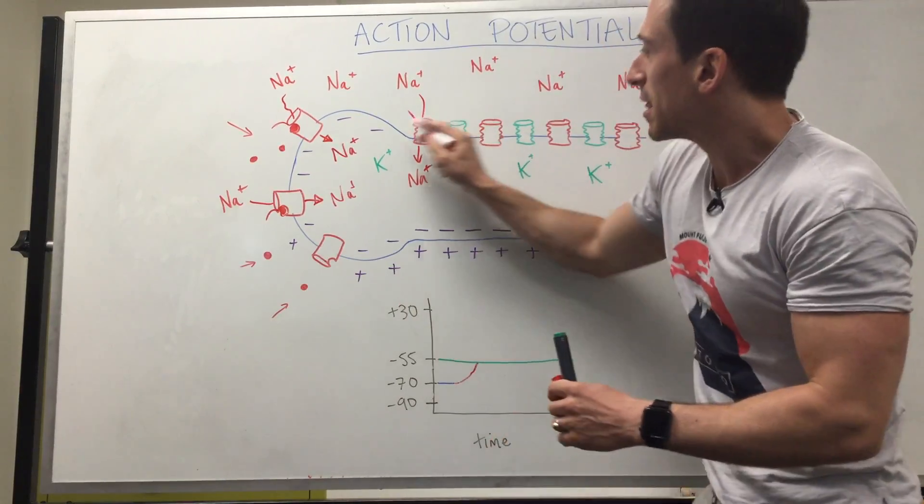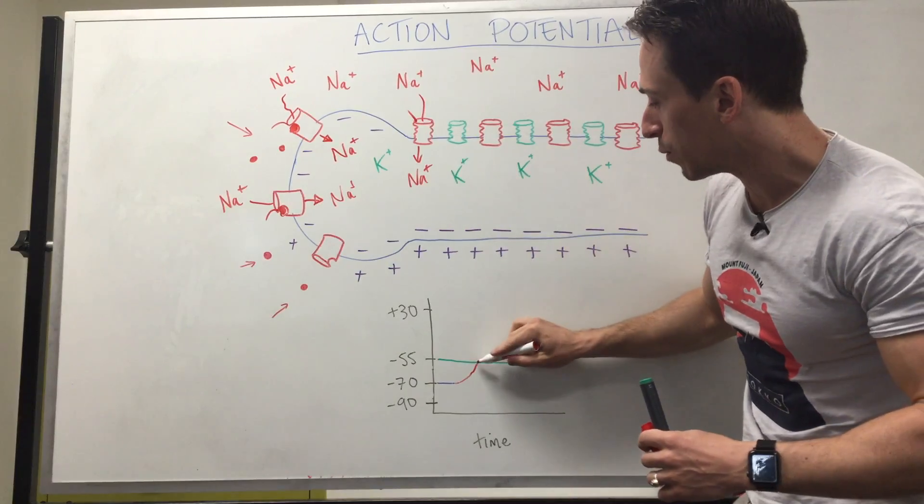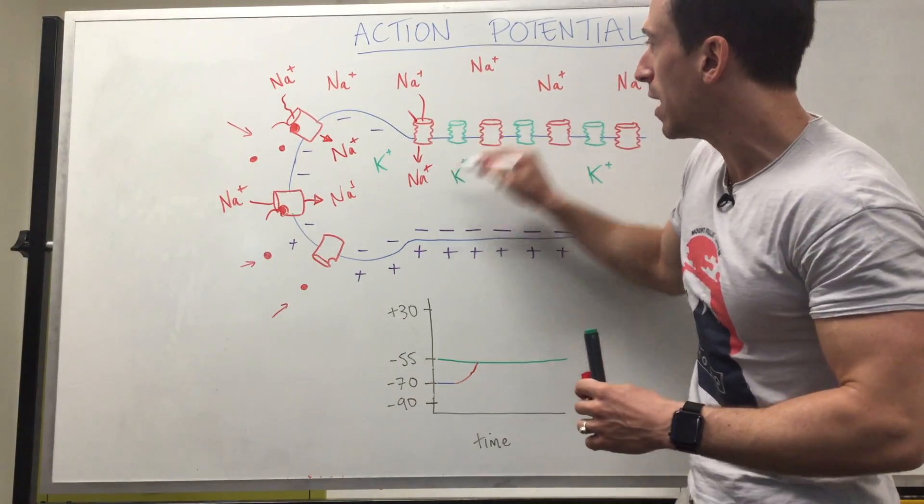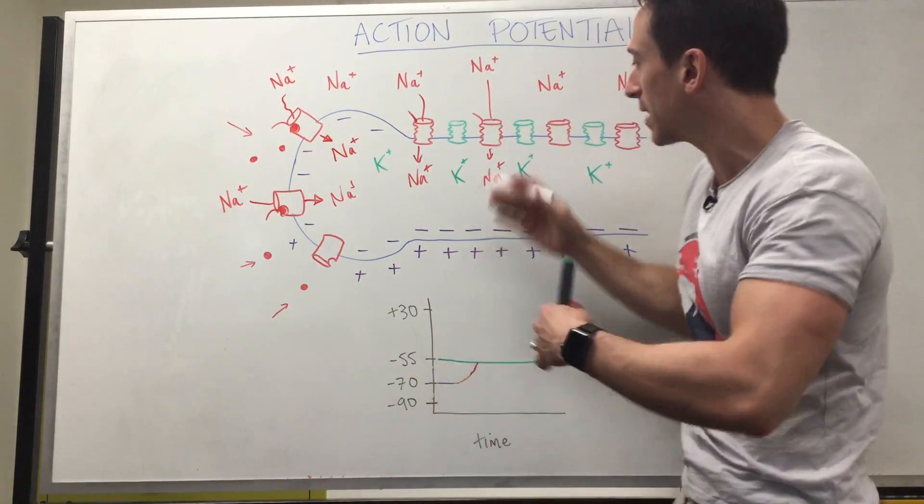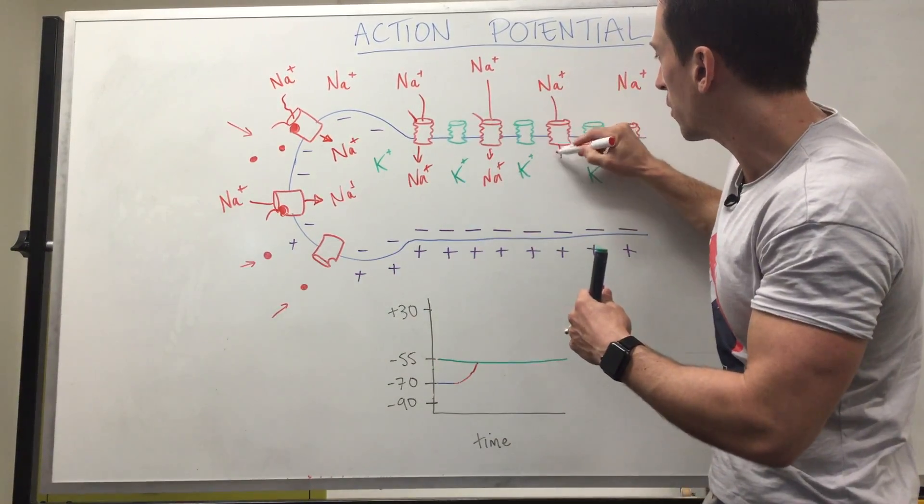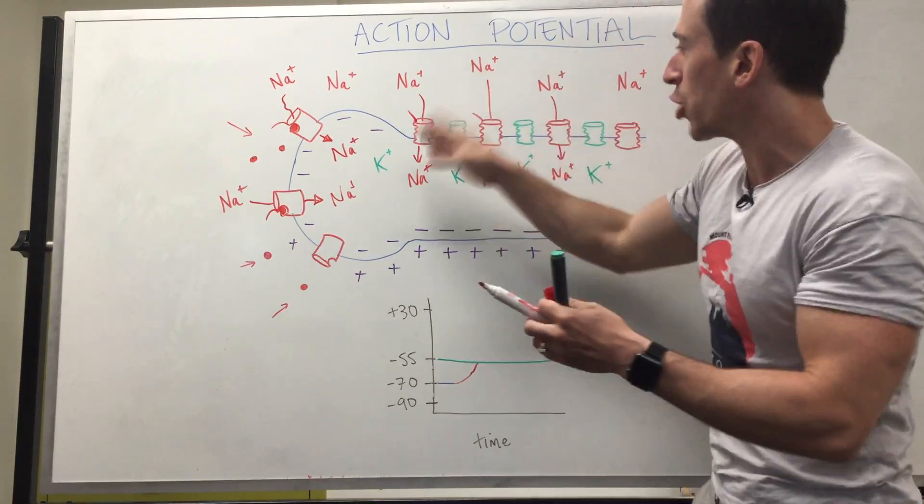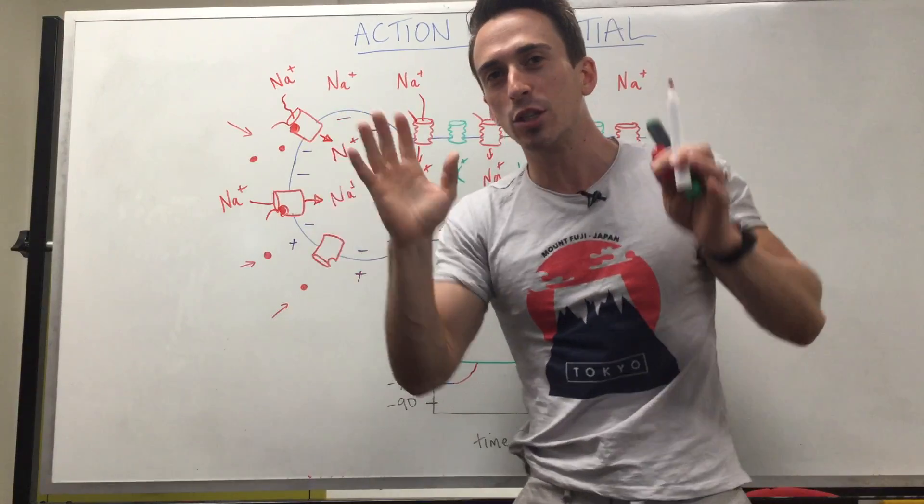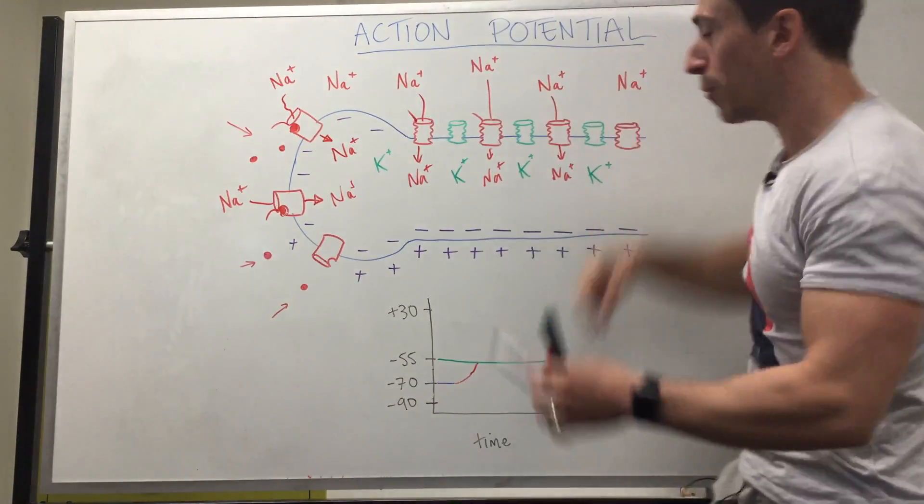That now means this part of the neuron becomes more positive, and if this part of the neuron becomes more positive and hits -55, it opens the next sodium channel and sodium rushes in. And the same thing happens. Hits -55, next sodium channel opens up. What you can see is what we've done is in a domino-like fashion we've opened voltage-gated sodium channels and sodium goes boom, boom, boom, boom.